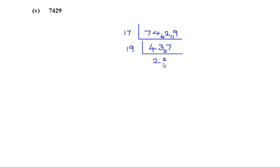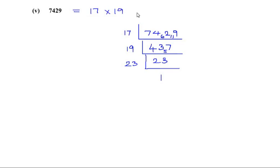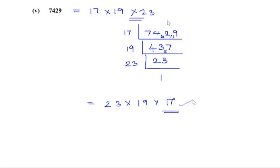Finally, 23 is a prime number so it goes in the table of itself — 23 times 1 is 23. So we can write 7429 as 17 times 19 times 23, all of which are prime numbers. Note that the order in which we write the product of prime numbers does not matter — you can also write it as 23 times 19 times 17; both answers are the same.